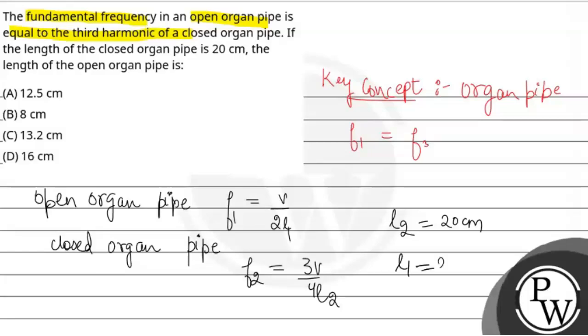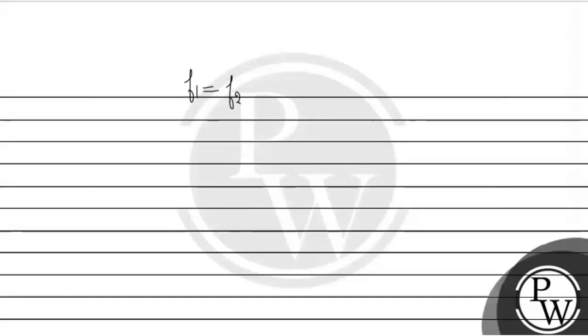Equating this frequency, V over 2L1 equals 3V over 4L2. Therefore, L1 will be 4VL2 divided by 6V. We cancel out V, that is 2L2 divided by 3.